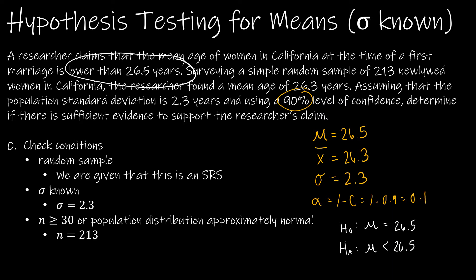The first step then, or step 0, is to check the conditions. We are given in the question that it is a random sample. Sigma is known to be 2.3 and n is 213. So everything is met, and I think I forgot to write down 213 as one of the values that I will need. So n equals 213.